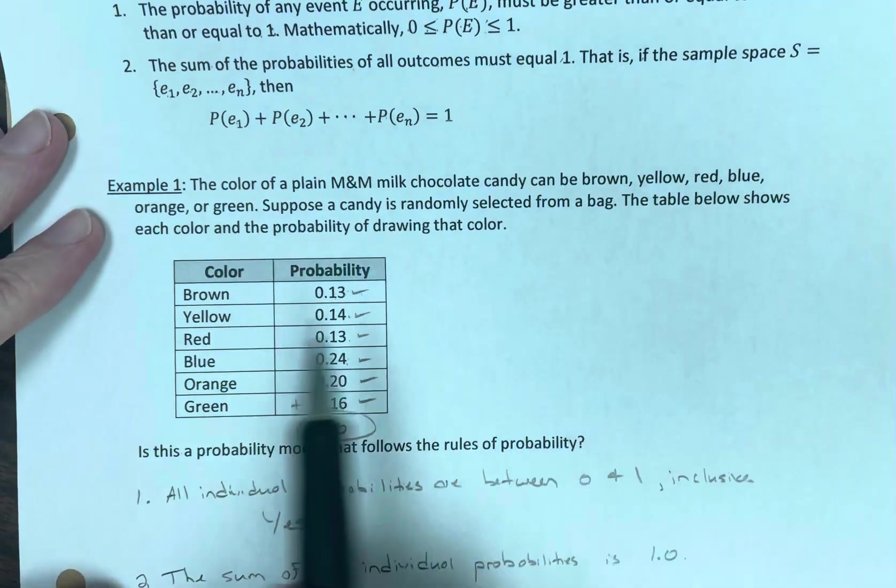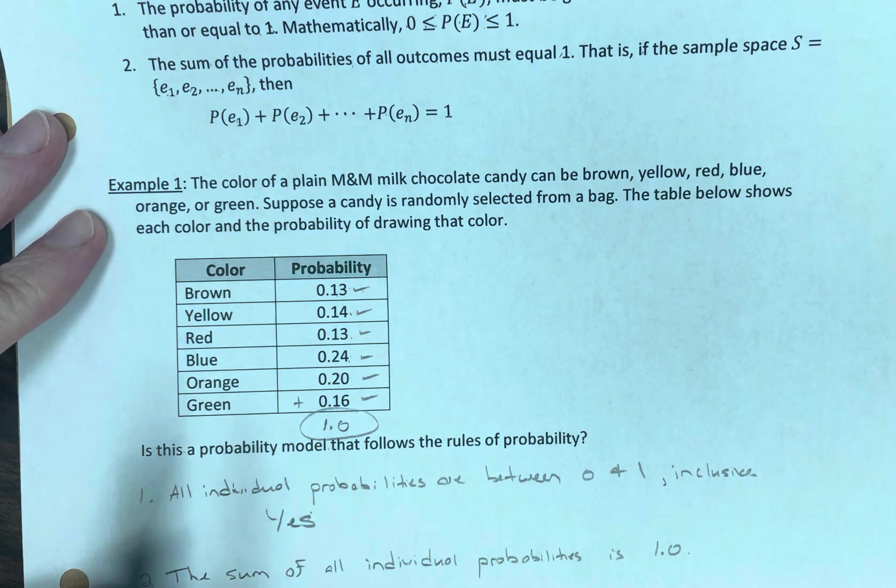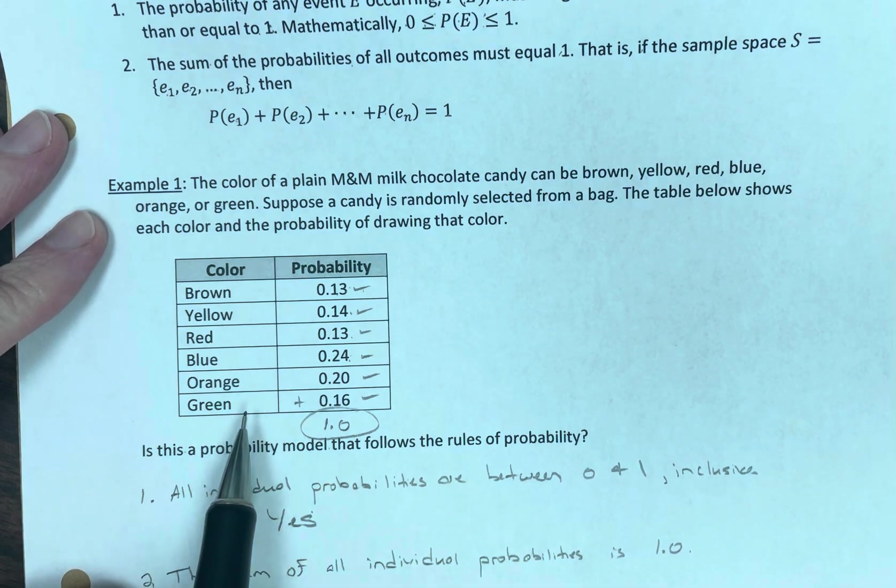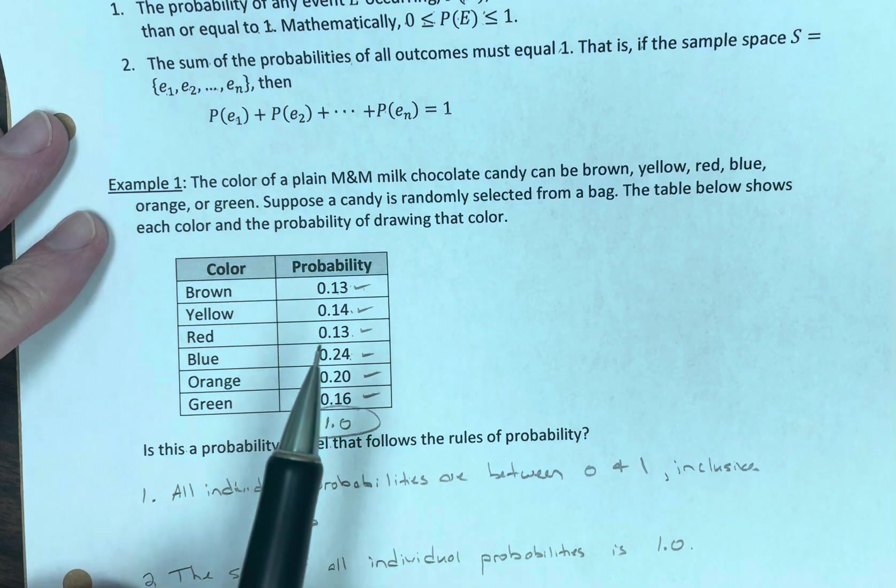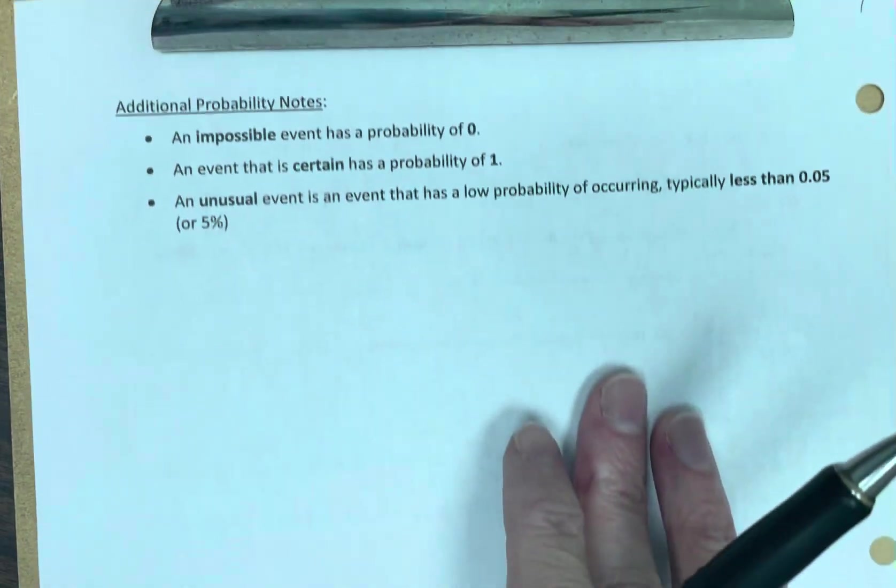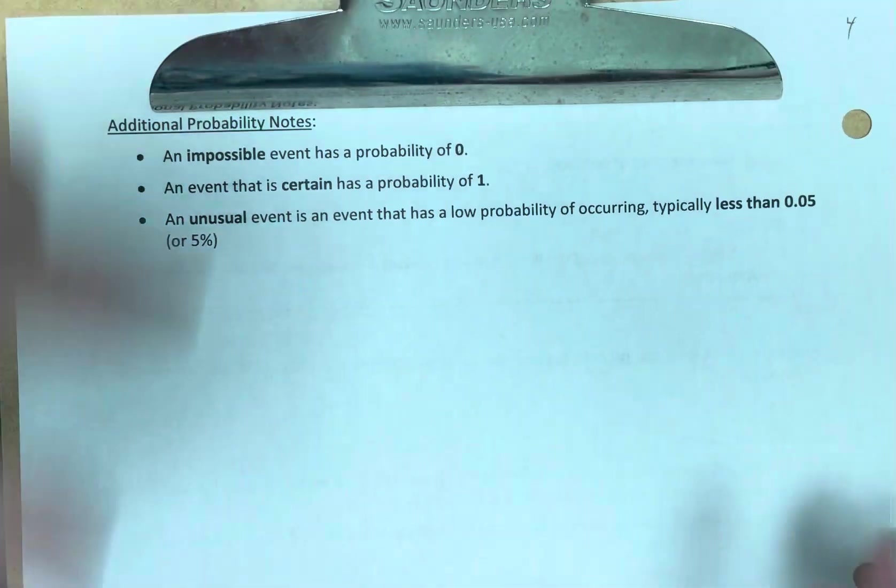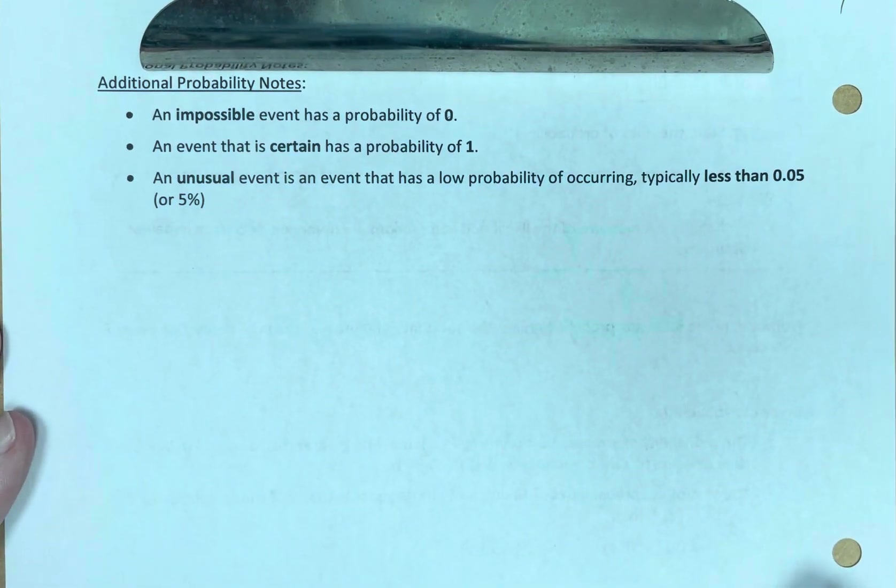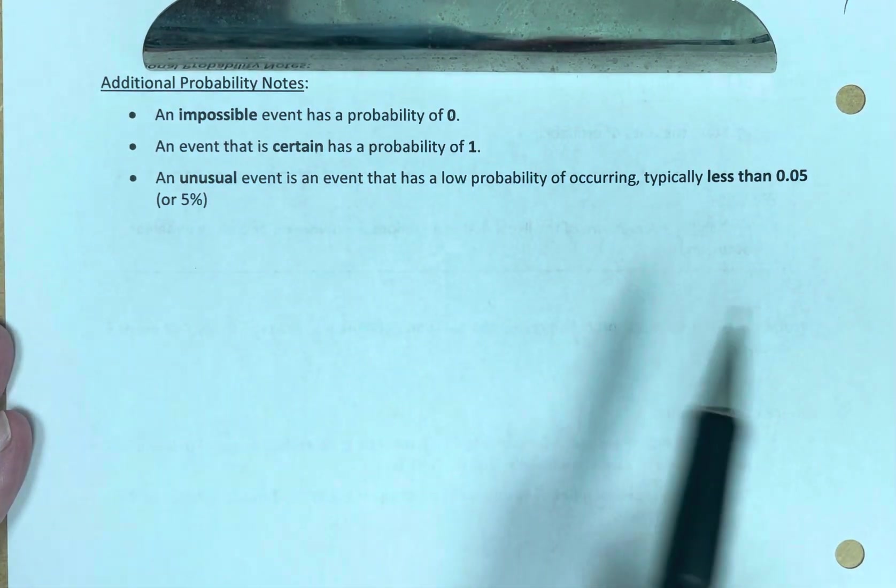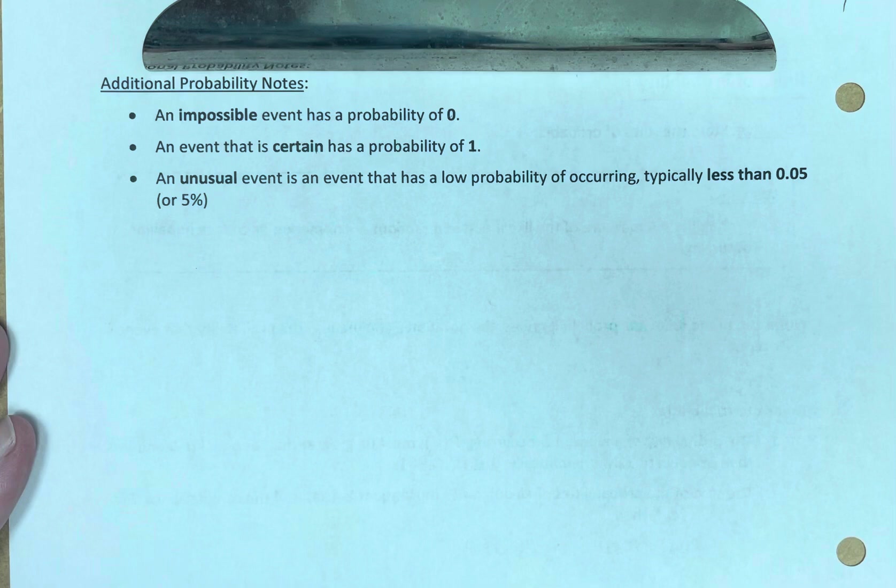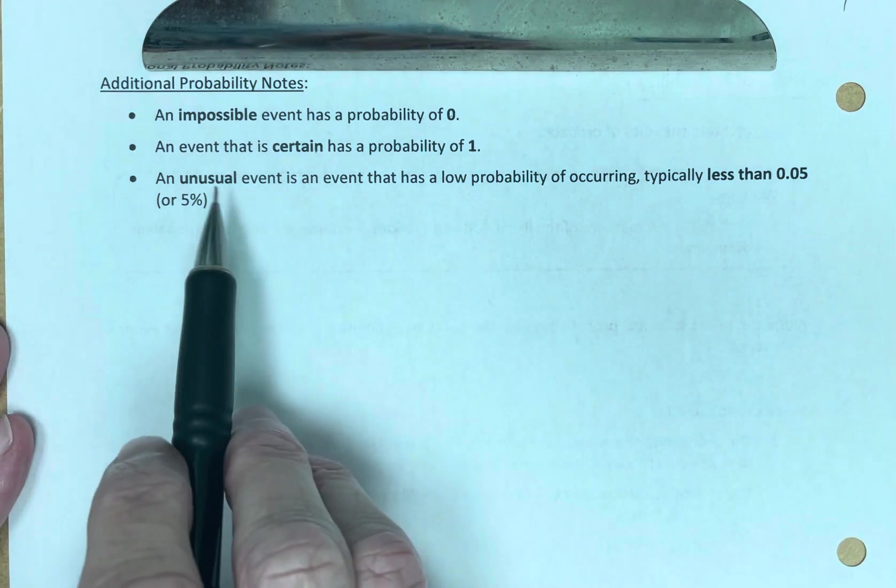Let's go back to our M&Ms. What is the probability of pulling a purple color? Well, there are no purple. So the probability is zero. Not going to happen. An event, that was number one, an event that is certain has a probability of one. It is going to happen. It will take place.